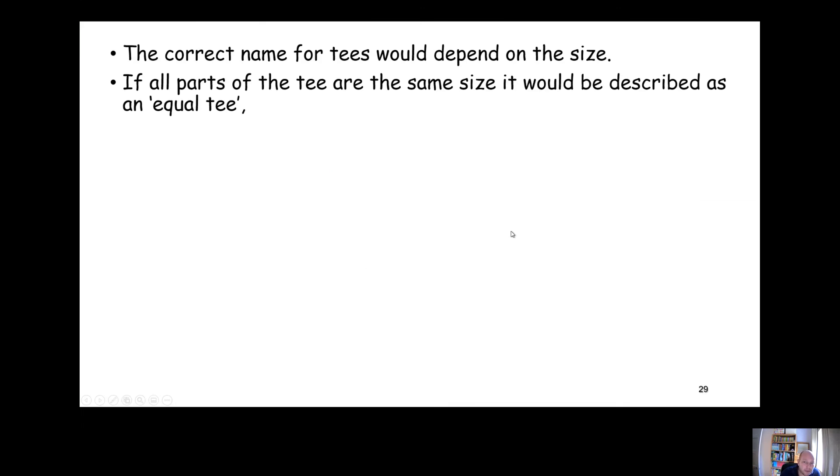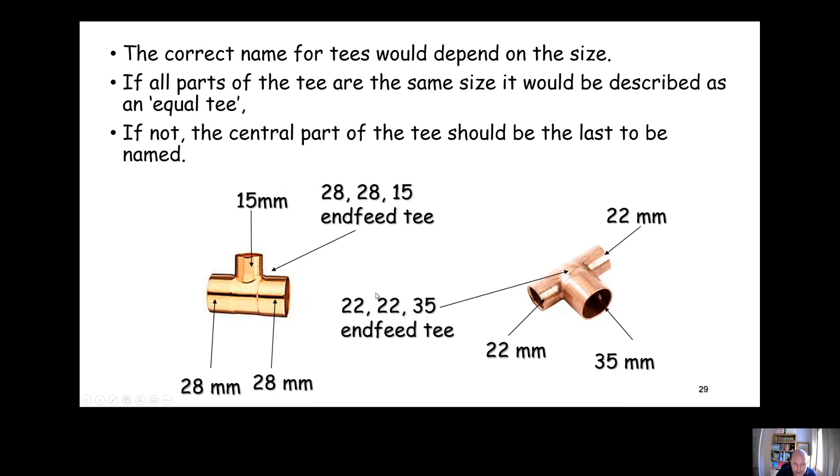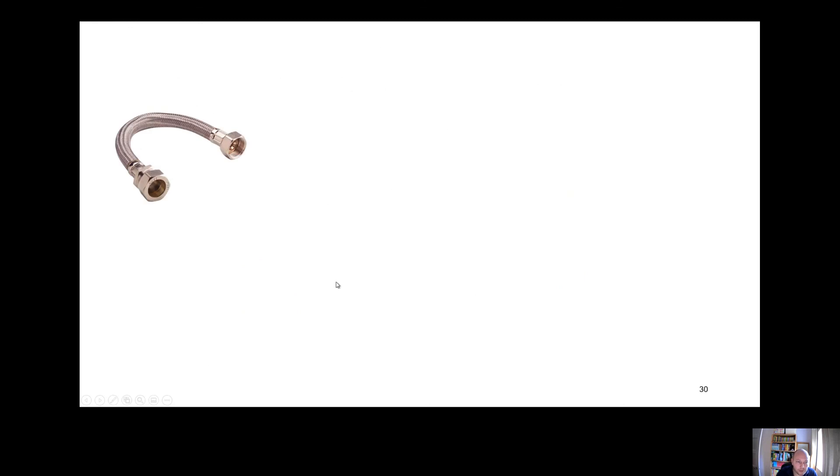Correct names for tees vary depending on their size. If all parts of the tee are the same size, it'd be an equal tee. So if all the parts were 15 mil, you'd call it a 15 mil equal tee. All the parts are 22 mil, you'd call it a 22 mil equal tee. If some of the parts are different sizes than the other, we'd always talk about the middle part, the central part of the tee, as the last thing we'd say. So this one, we've got two ends are 28 mil, the middle is 15 mil, so we call it a 28-28-15 tee, or a 28-28-15 NV tee in this case. This one we've got the two ends are 22 mil, the middle part's 35, so this one's a 22-22-35 NV tee.